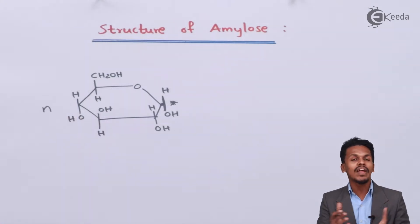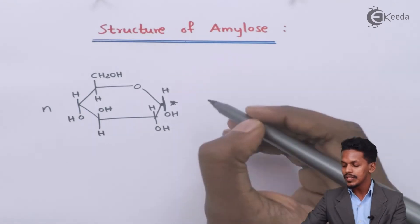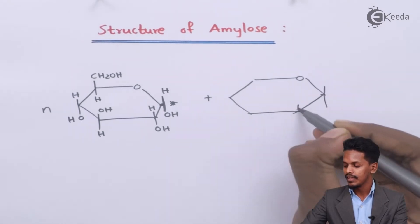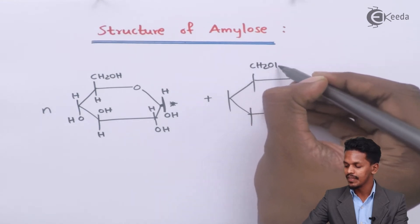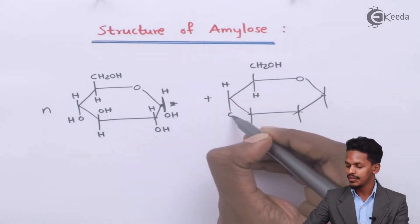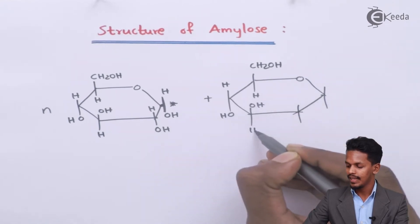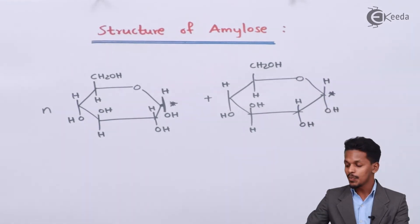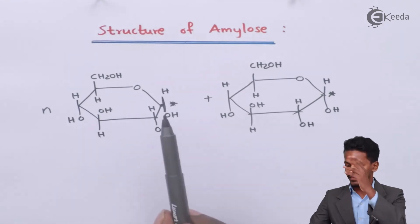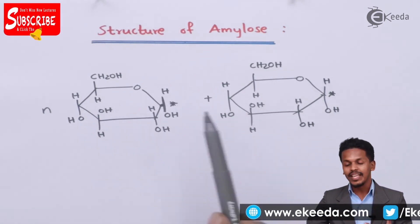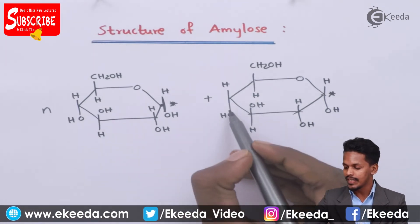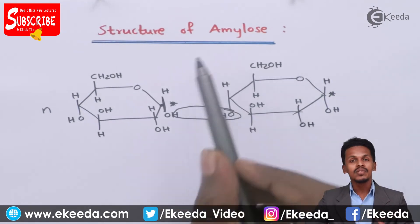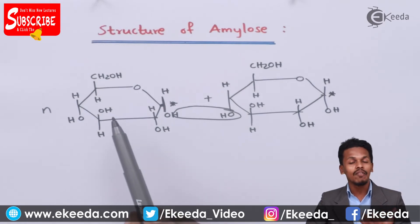Suppose we combine N moles of alpha-D-glucopyranose. For example, combining another mole of alpha-D-glucopyranose gives us CH₂OH, H, H, OH, OH, H, H, OH. When two monosaccharides combine with each other, a water molecule gets eliminated — that is how maltose is formed. But amylose is nothing but a linear polymer of alpha-D-glucopyranose.